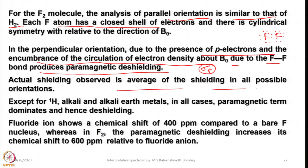The actual shielding observed is the average of the shielding in all possible orientations. When considering all possible orientations you take the two extremes — perpendicular and parallel — and average them. Except for 1H and alkali and alkaline earth metals where only s electrons are in the valence shell, in all other cases the paramagnetic term dominates and deshielding occurs. For 1H NMR, sodium NMR, or any other alkali and alkaline earth metal NMR, the paramagnetic term is absent; but for any element with p electrons in the valence shell, the paramagnetic term dominates.